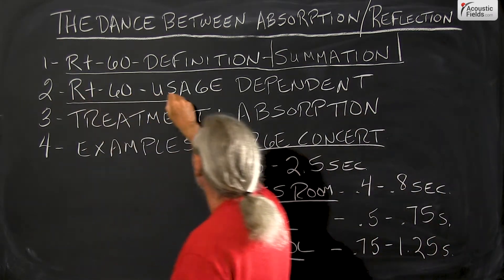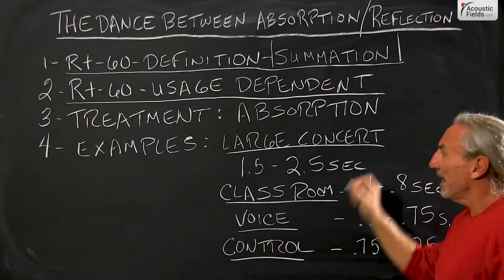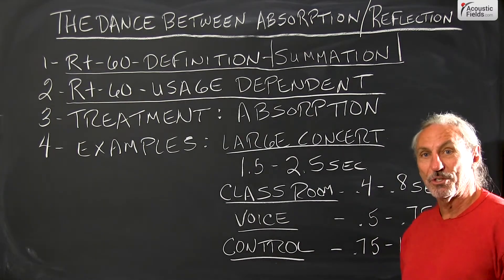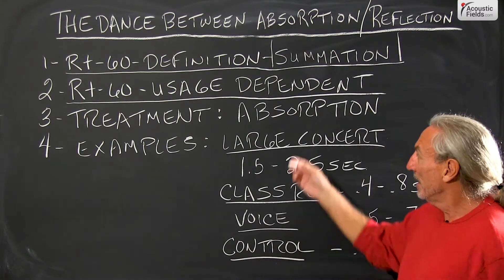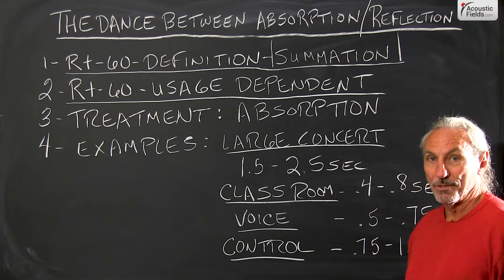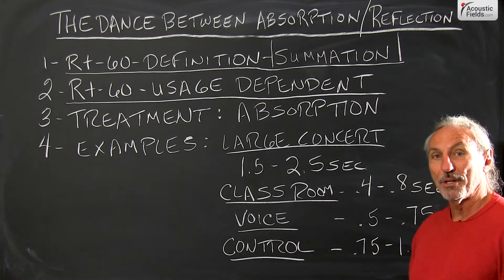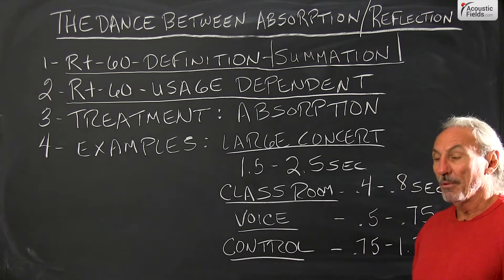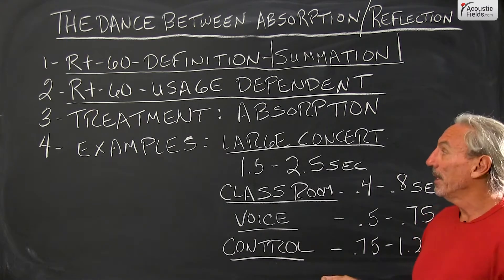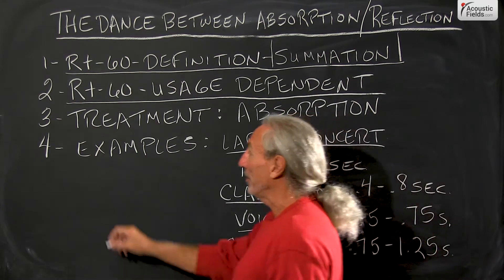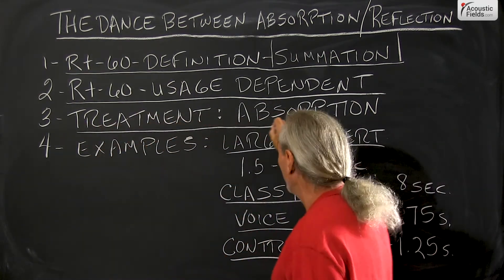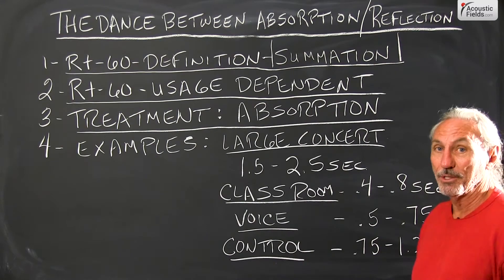Now what we have to understand is that the RT60 is just a measurement that we have to utilize to balance with our usage. So different usages, we have to control the amount of reflections in a different way. We have to lower them and sometimes we have to raise them. What is our treatment of choice? Almost in all cases it's absorption. Diffusion is our other option.